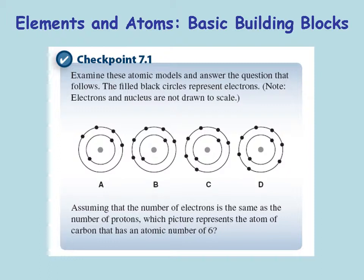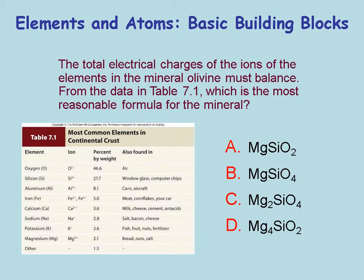Here's a question: assuming that the number of protons equals the number of electrons, which picture represents the atom of carbon? Carbon has an atomic number of six, so you'd have six electrons. So A would be the answer.